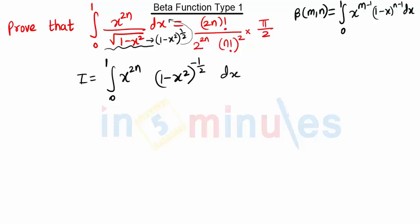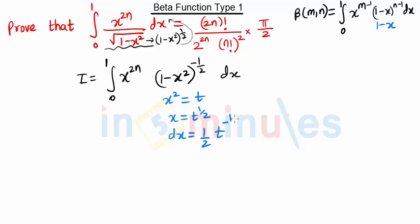These two terms are similar, but here we want a (1 minus x) term and here we have a (1 minus x squared) term. So we put x squared equal to t, giving us x equal to t raised to half, and dx equal to half t raised to minus half dt.